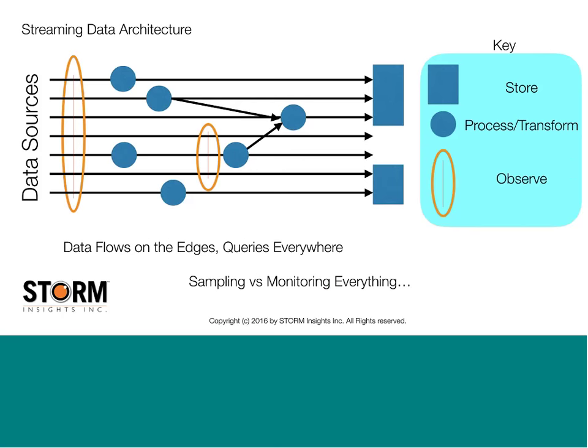In a streaming situation, you've still got the data flowing on the edges, but you can have a query anywhere. Think of it as almost like a fishing net that you stick in that stream — the water's going through, and if something of interest comes by like a fish and it gets caught, then you've actually changed the data. Think about this as a query that is stationary while the data is flowing through it. That comes back to the question: do we need to look at every piece of data, or do we sample? If you've heard the term complex event processing, that's really what we're looking at here.